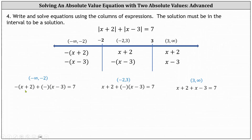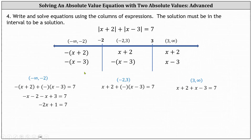Beginning on the left, let's remove the parentheses. The opposite of x plus two is negative x minus two. Instead of writing plus the opposite of the quantity x minus three, we could write minus the quantity x minus three. Either way, removing the parentheses gives us negative x minus two minus x plus three equals seven. Combining like terms: negative two x plus one equals seven. Subtracting one from both sides: negative two x equals six. Dividing by negative two: x equals negative three. Negative three is in the open interval from negative infinity to negative two, so x equals negative three is a solution.